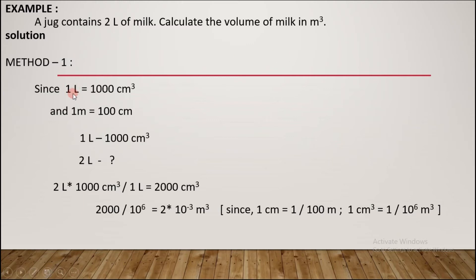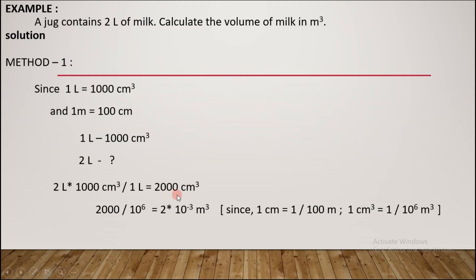We need to use the conversion: 1 liter is equal to 1000 cm³. We also know that 1 m is equal to 100 cm. So 1 liter equals 1000 cm³, and 2 liters equals 2000 cm³. We now need to convert cm³ to m³ using 1 m = 100 cm.